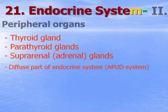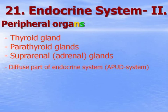Endocrine system peripheral organs. In this lecture I describe the thyroid gland, parathyroid glands, suprarenal or adrenal glands, and the diffuse part of the endocrine system.